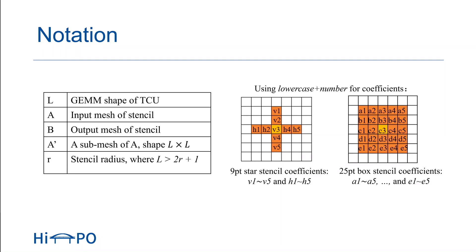We draw one parameter matrix for the reduction of each horizontal slide. Taking the 25-point box stencil as an example, we construct five parameter matrices PA, PB to PE, where PA is used to get the first horizontal slide result and PE is used to get the fifth horizontal slide result. However, using the same GEMM strategy as for the star stencil directly leads to incorrect results. As shown in the figure, we can perform the first GEMM operation on the tensor core unit to obtain TA for the first horizontal slide result.